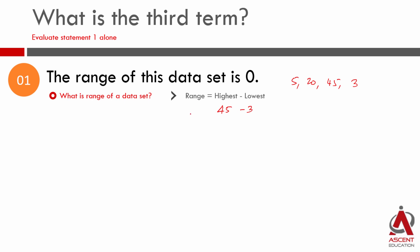So the range for this data set is equal to 45 minus 3, which equals 42. Highest minus lowest gives you the range for any data set. In the statement, the range of this data set is equal to 0. So the highest of these numbers minus lowest of these numbers is equal to 0. So the highest term is equal to the lowest term.